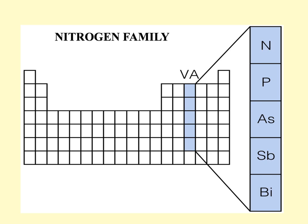The nitrogen family is named because it begins with nitrogen. It contains nitrogen, phosphorus, arsenic, antimony, and bismuth. Nitrogen is a component of the atmosphere. Do you know something about arsenic? Remember that it is a very poisonous element.